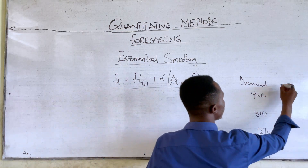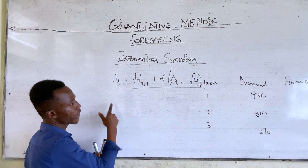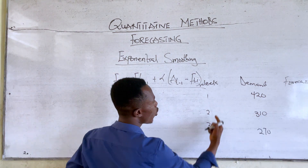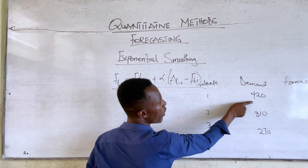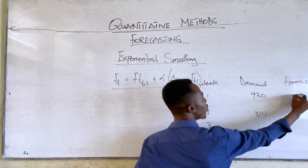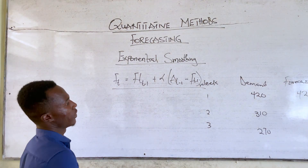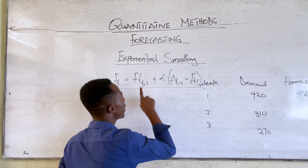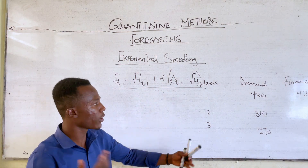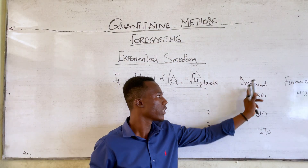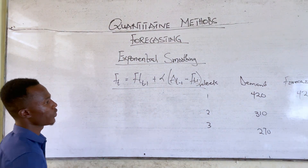Now we are going to forecast for a particular table. When forecasting for period 1 or week 1, we don't have any previous demand. So the demand for the first week is going to be the forecast for the first week. Moving to week 2, we need the forecast and actual value for the previous week, but since we have no prior history, we always set the week 1 forecast equal to the week 1 actual demand.